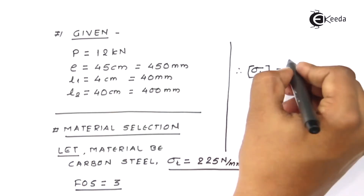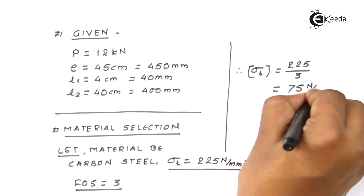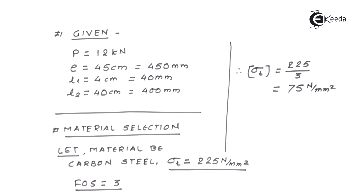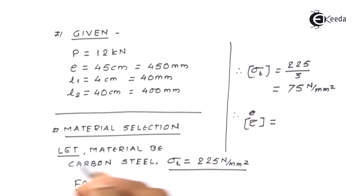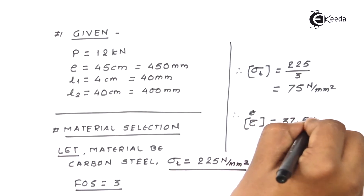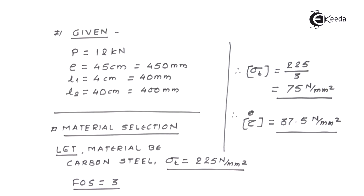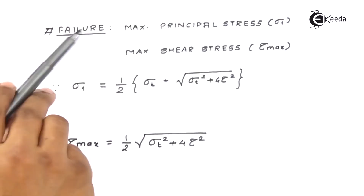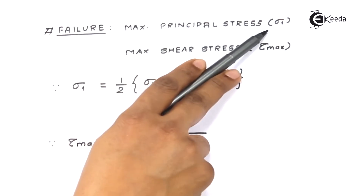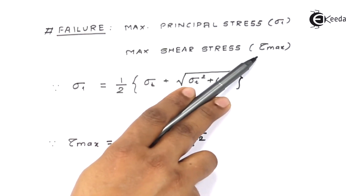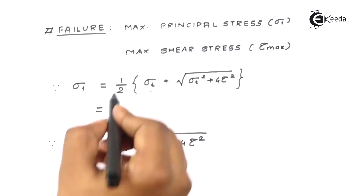The allowable value of tensile strength will be 225 divided by factor of safety, which comes out to be 75 Newton per millimeter square. Similarly, the allowable shear value will become exactly half of this, coming out to be 37.5 Newton per millimeter square. The next important thing is the failure mode — the given bolts may fail in principal stresses and shear stresses, and we have to find out the maximum value of each using the formulae we already know.